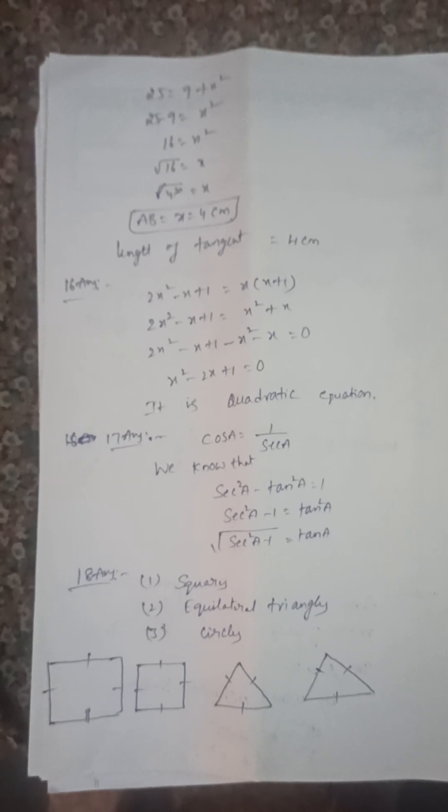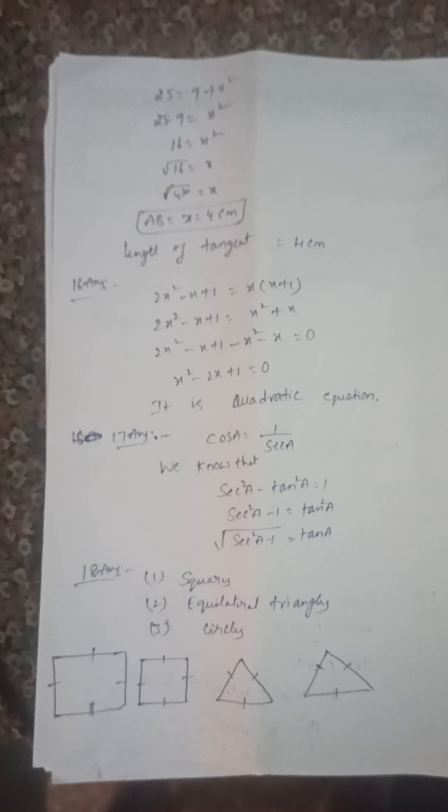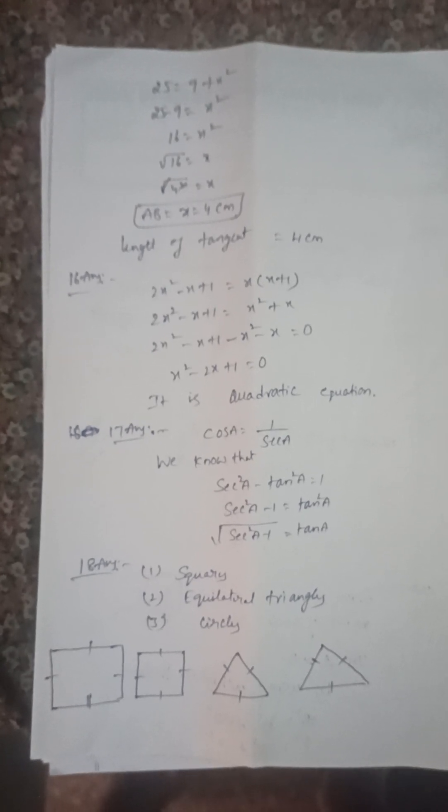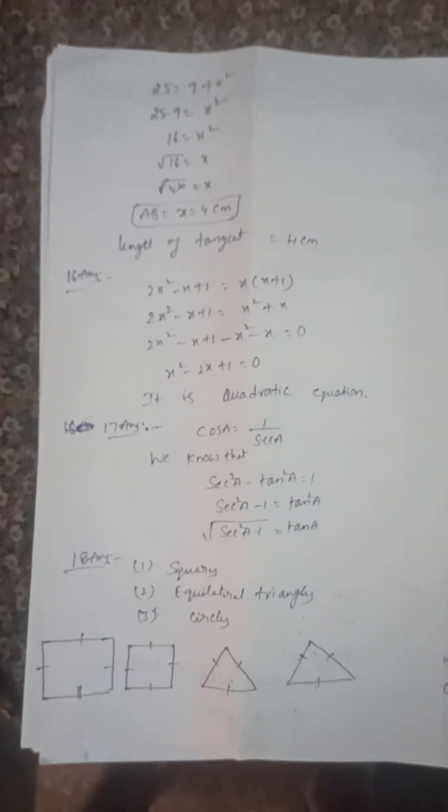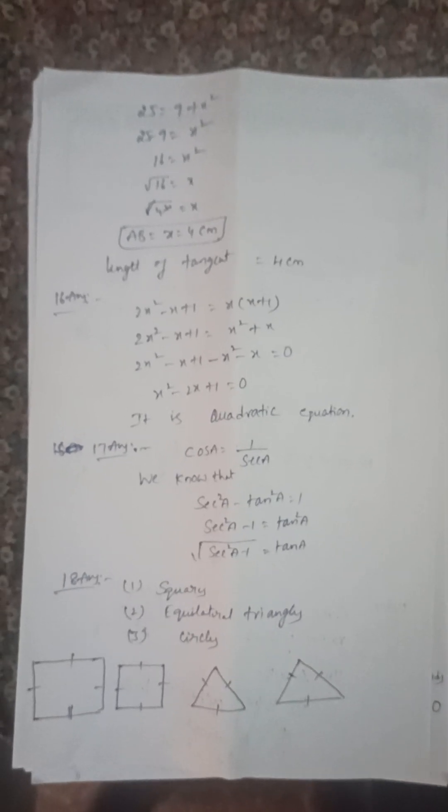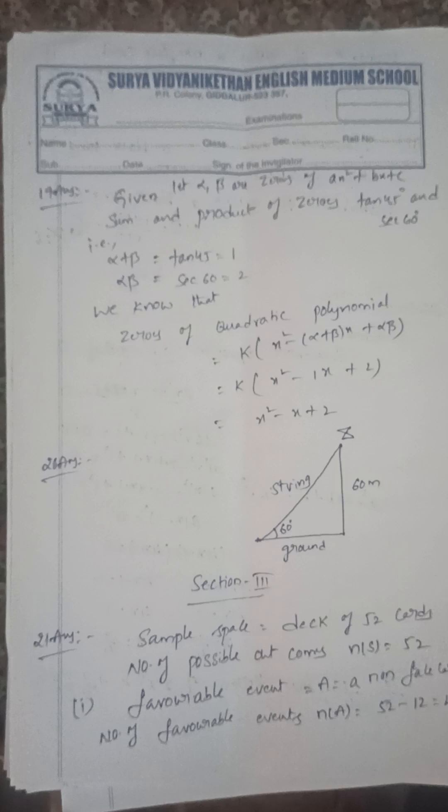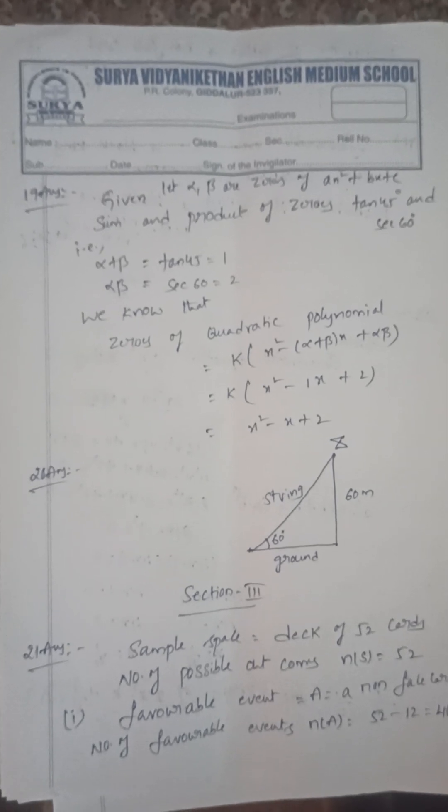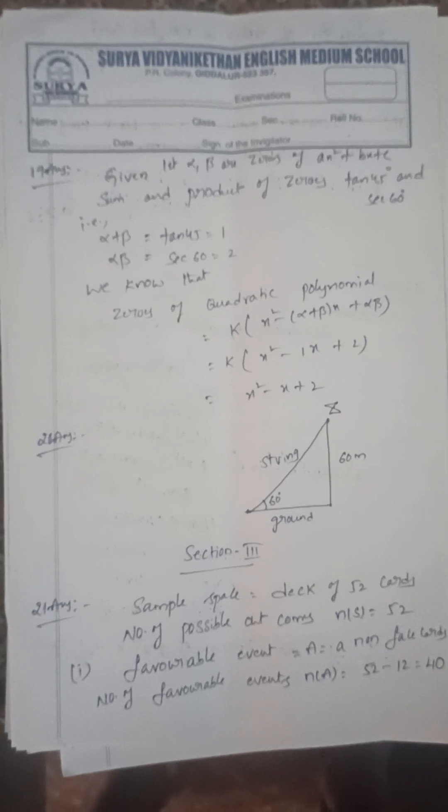Next, 16th one: is it a quadratic form or not, quadratic equation or not? 17th one: sin, cos, and tan we can write in secant ratios. Next, 18th one: two similar figures—squares, triangles, circles.